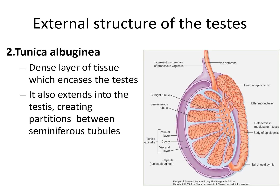The second layer is tunica albuginea. It is otherwise called the capsule of the testis. It is a dense layer of tissue. It has extensions into the testis, dividing the seminiferous tubules into different lobules. This is one seminiferous tubule, and they are separated by the extensions of tunica albuginea. You can see many lobules here, all formed by those extensions.